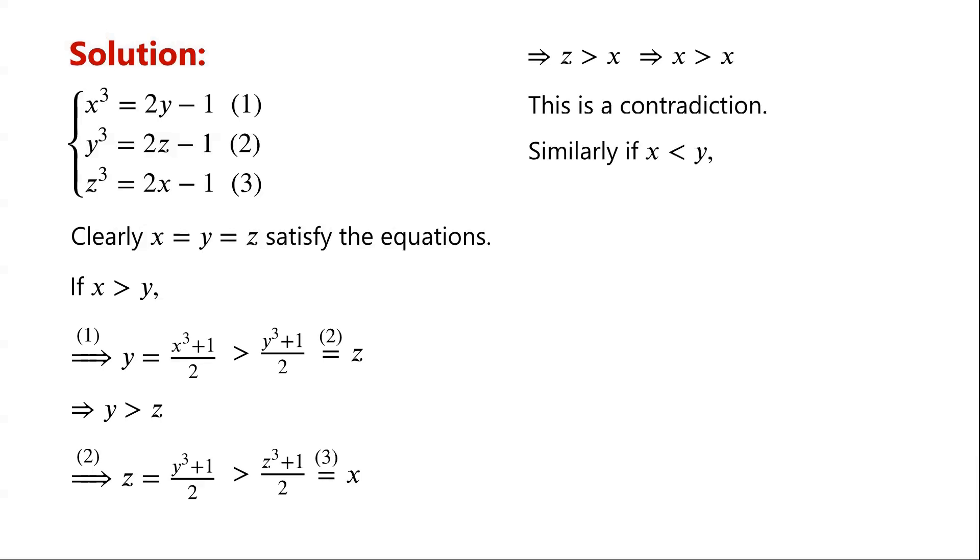Similarly, if we assume x < y, then y < z and z < x, so we have x < x. This is a contradiction. Therefore, x must equal y. Similarly, we can prove y = z.